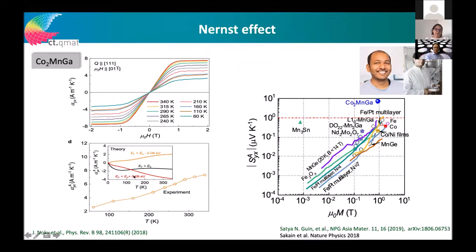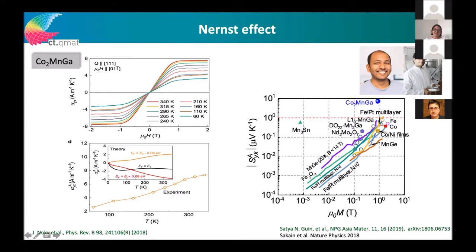The anomalous Hall effect in Co₂MnGa was known since 2011 from the Mainz group, but the anomalous Nernst effect had not yet been investigated. We measured it and found a giant anomalous Nernst effect — the largest so far, with a value around 8 μV/K. We assume it would be even larger at the Curie temperature. Plotting the anomalous Nernst effect in μV/K versus magnetization shows that topological materials like Co₂MnGa are much higher than all common magnetic materials, due to the additional Berry phase contribution.